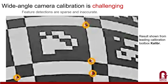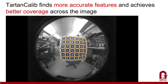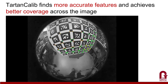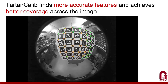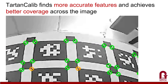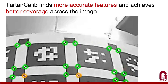The results shown in this video are from the leading calibration toolbox, Calibre, which proves to be especially limited at the edge of the frame, where detected features are sparse and inaccurate. We propose a novel calibration pipeline, Tartan Calib, which, to the best of our knowledge, achieves the best robustness and accuracy in April tag detection.